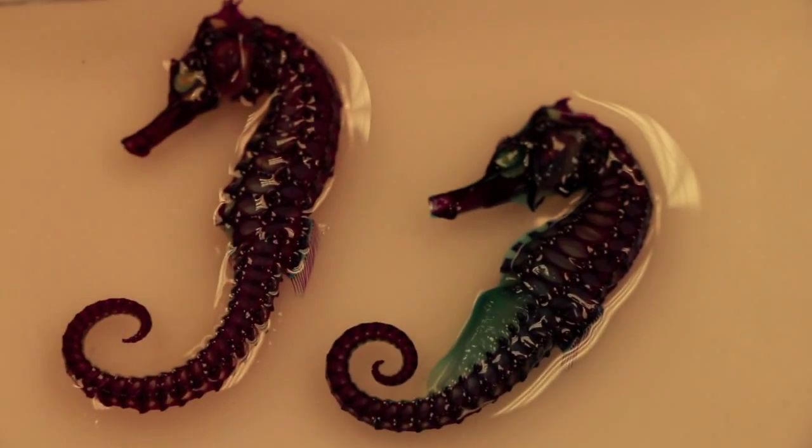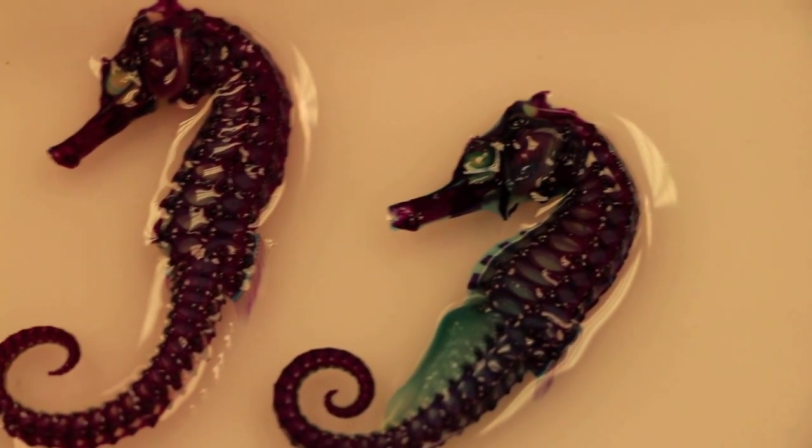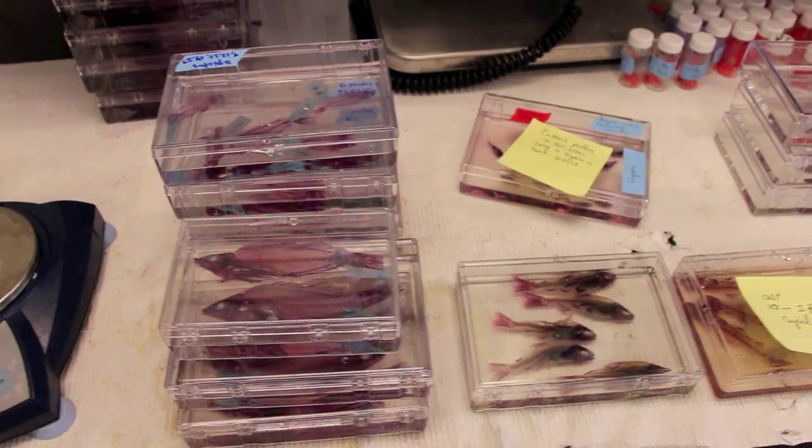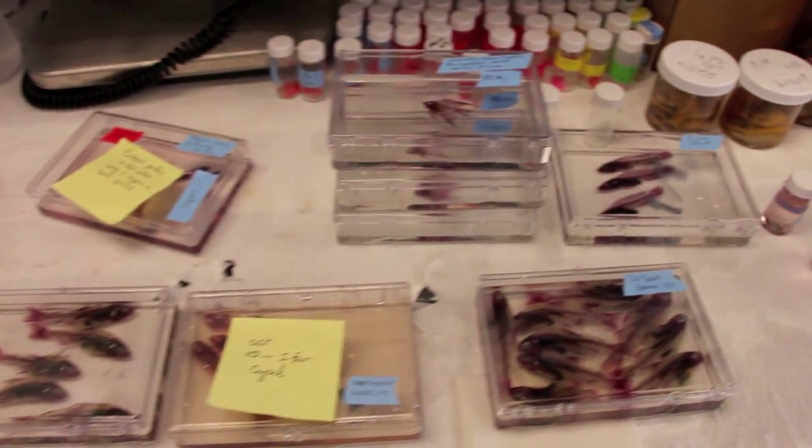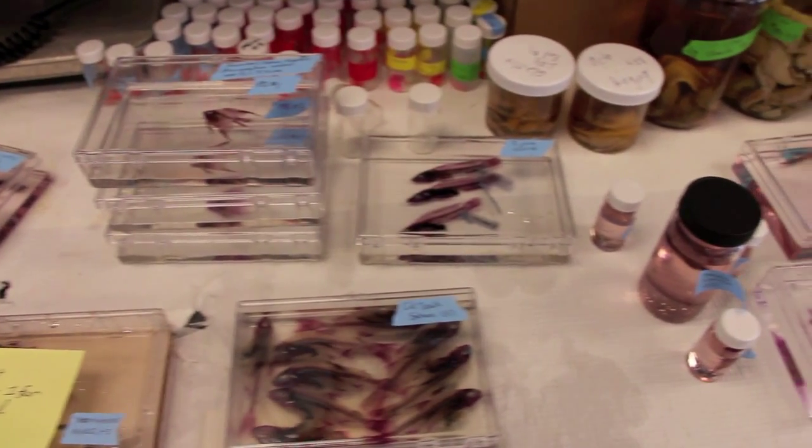Here in Elver Lab, we choose to clear and stain most of our specimens. We do this for a variety of reasons. The first of which is that the specimens become pliable again. And also, the muscles are still intact, so we can see how those attach to the skeleton.